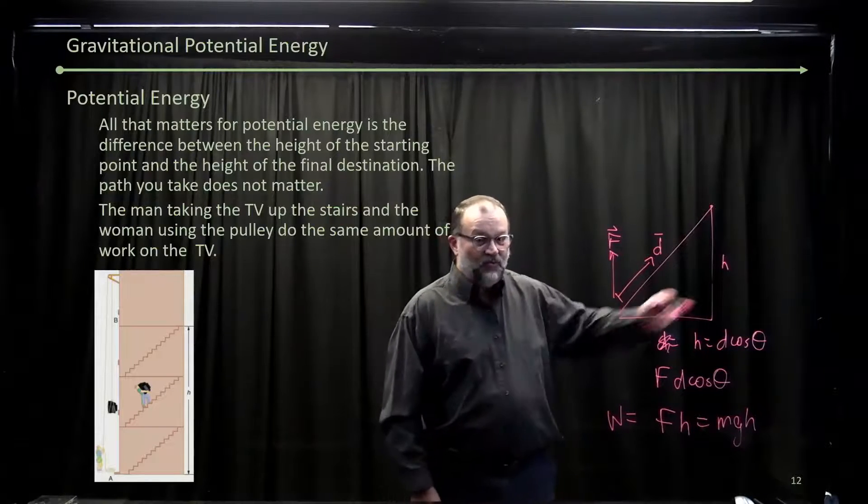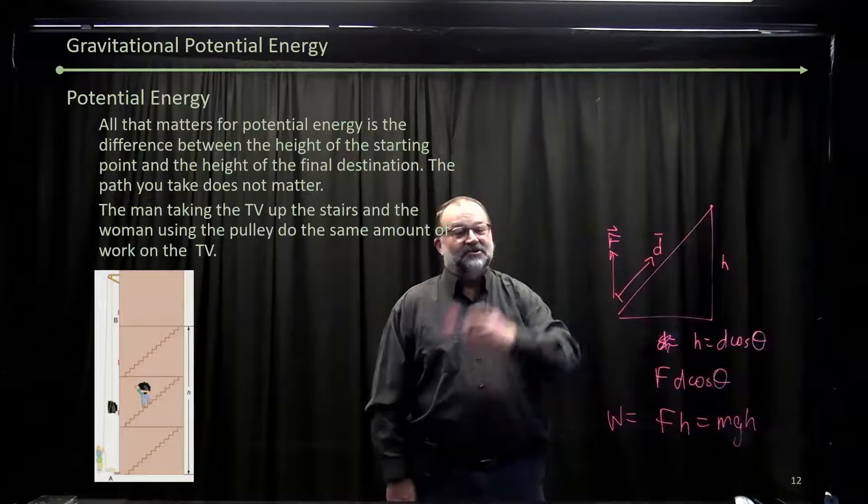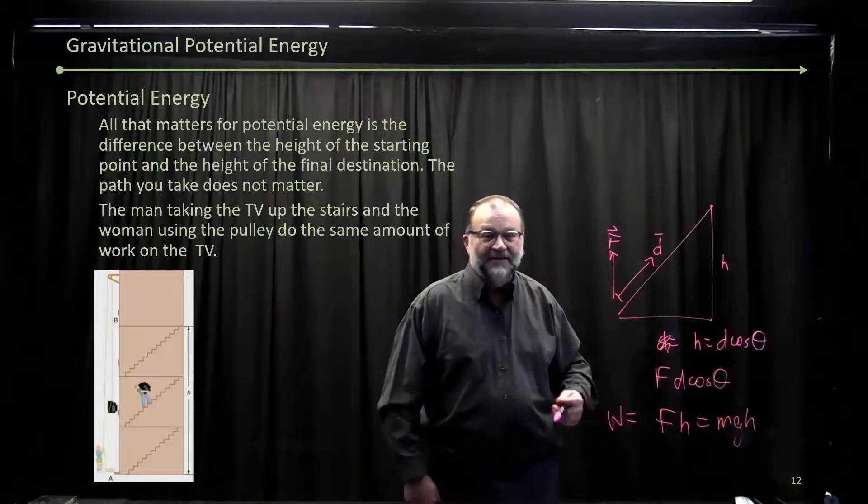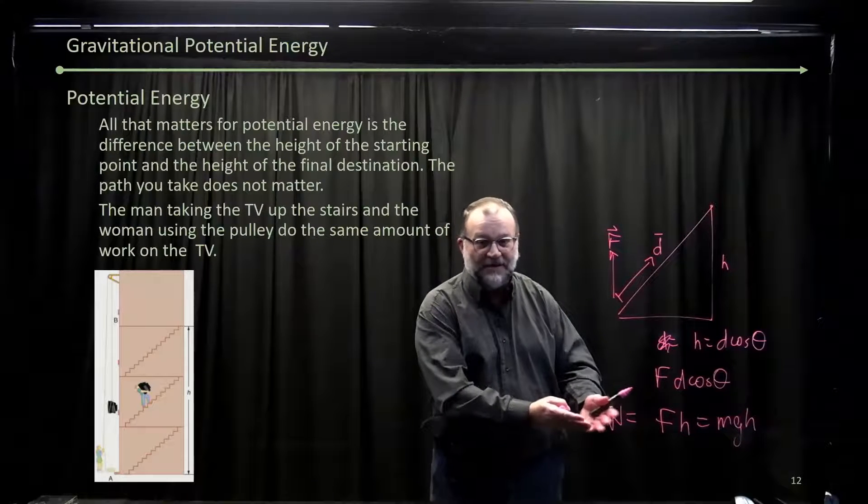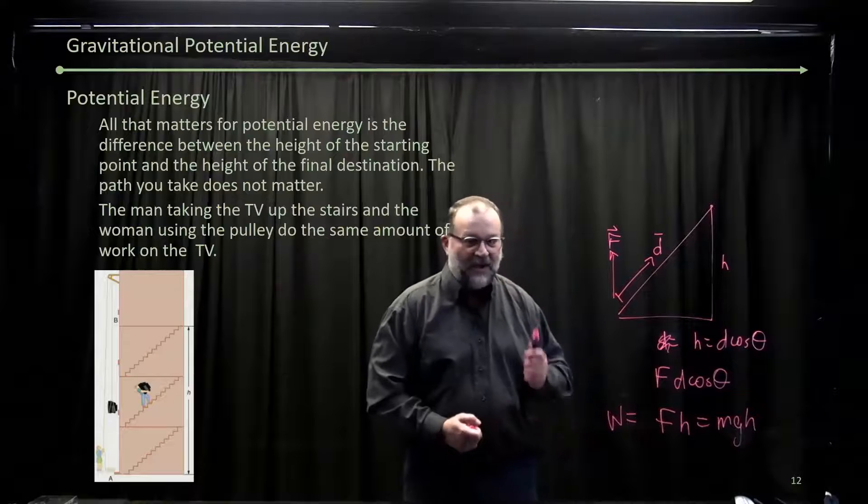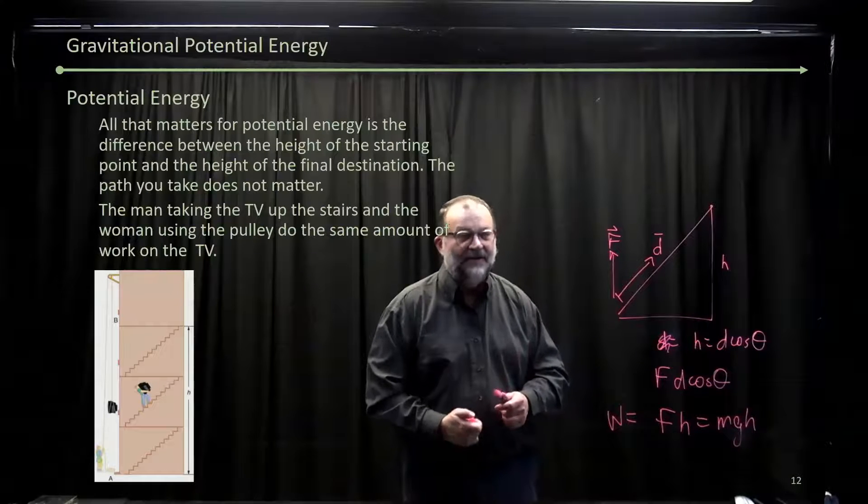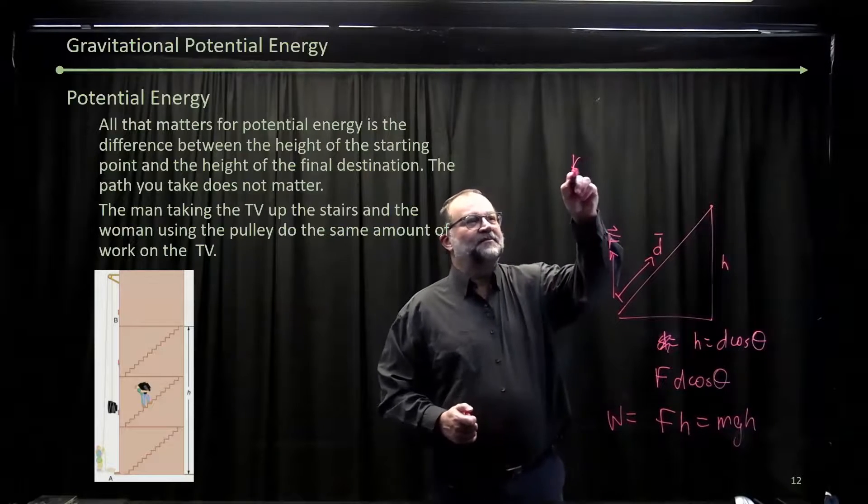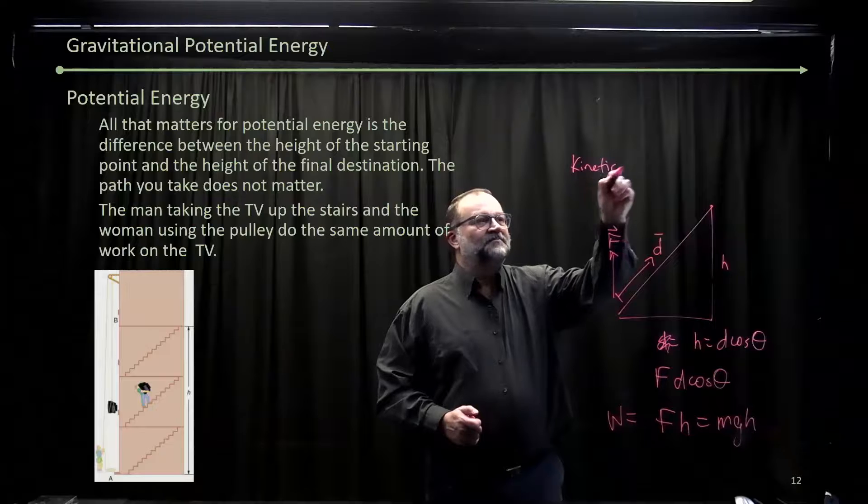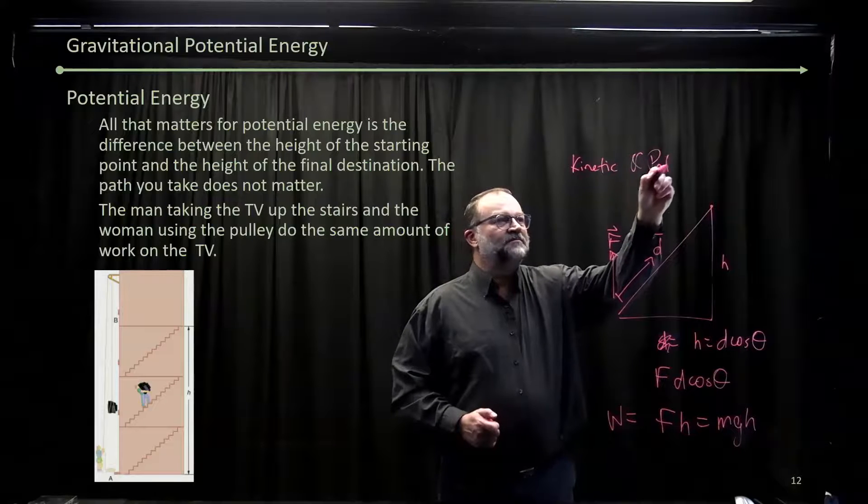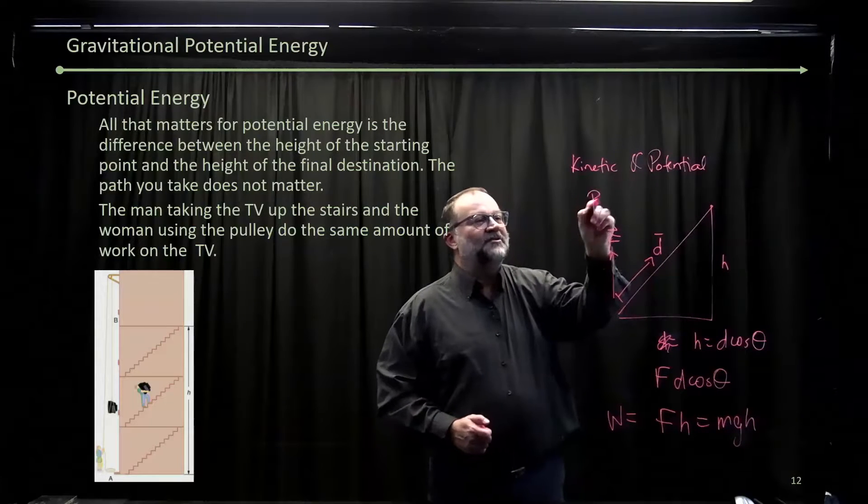And it doesn't matter that you went up a slope, that you went up some circuitous path, the work is still mgh. The path does not matter. So with both kinetic and potential, we're path independent.